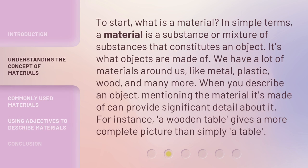To start, what is a material? In simple terms, a material is a substance or mixture of substances that constitutes an object. It's what objects are made of. We have a lot of materials around us, like metal, plastic, wood, and many more. When you describe an object, mentioning the material it's made of can provide significant detail about it. For instance, a wooden table gives a more complete picture than simply a table.